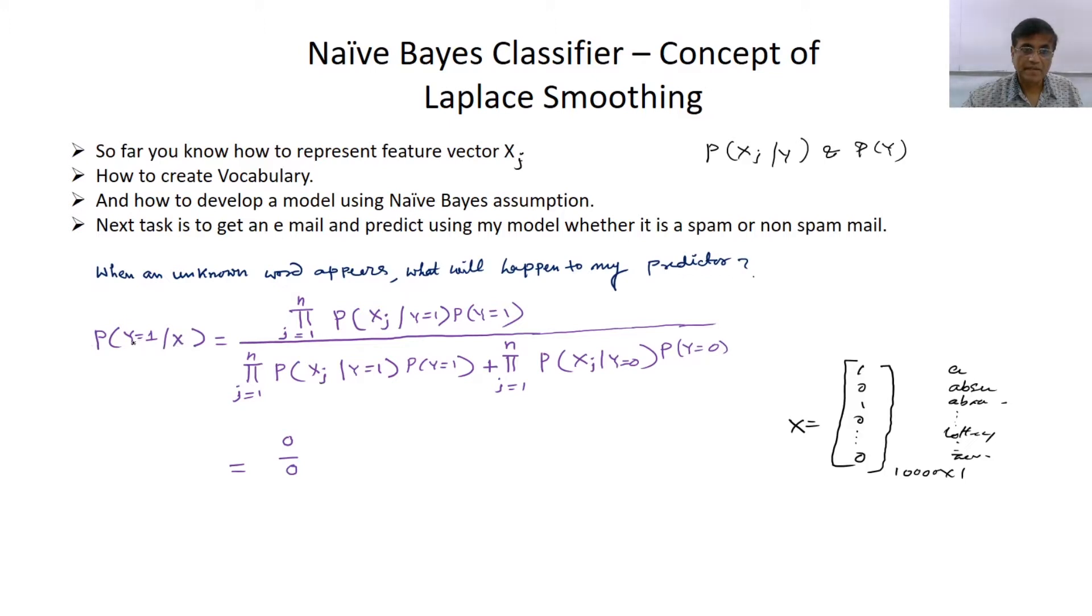This is the equation for prediction. I have some feature and my spam filter will tell me whether the feature belongs to a class of spam mail y equal to 1. Now if an unknown word appears in a mail I'm testing, there is an unknown word for my spam classifier it has never seen before, then the probability of that feature belonging to either class spam or non-spam will be 0.